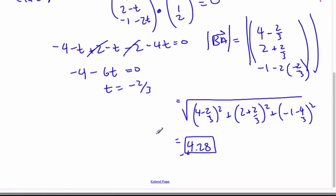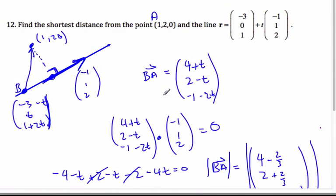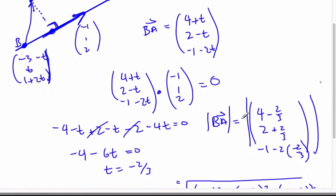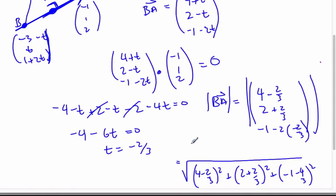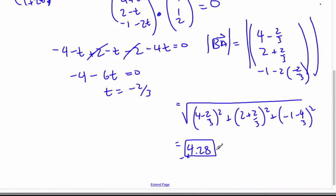So, assuming I didn't make any computational errors, my procedure is valid. I define point B here as any point on the line from my equation. I get my vector BA, and I dot product it with the direction of the line. I set it equal to 0, solve for t, and then that means B is really right here, and so I'm looking for the magnitude of this vector, which is 4.28.